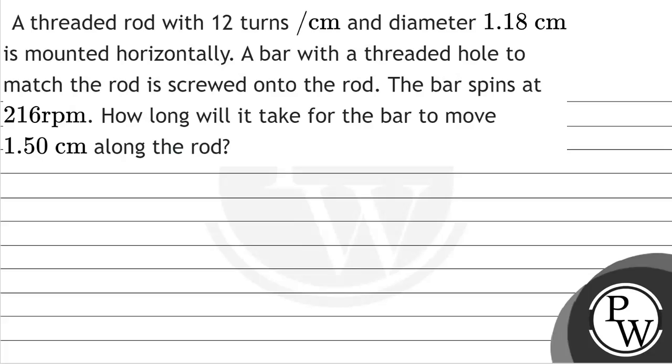Hello, let's read the question. A threaded rod with 12 turns per centimeter and diameter of 1.18 centimeter is mounted horizontally. A bar with a threaded hole to match the rod is screwed onto the rod. The bar spins at 216 revolutions per minute. How long will it take the bar to move 1.50 centimeter along the rod?